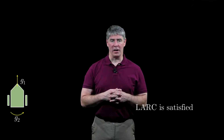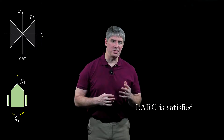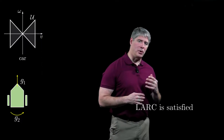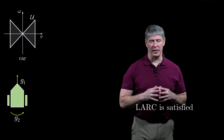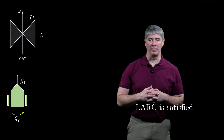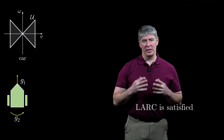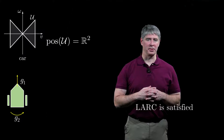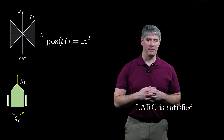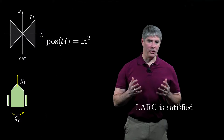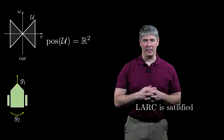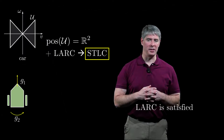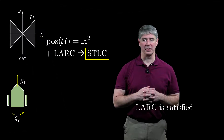If the robot is a car with a reverse gear, the control set U is a bow-tie-shaped region, as we learned in an earlier video. This control set positively spans the two-dimensional control space. Therefore, by the theorem, the car with a reverse gear is small-time locally controllable from all configurations.